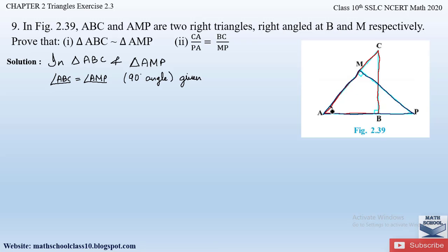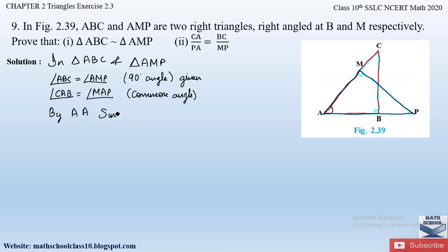Angle ABC = angle AMP = 90 degrees, that is given. Also, angle A is common between the two triangles ABC and AMP. So we write angle CAB = angle MAP — that is the common angle. We now have two angles equal in the two triangles, so by angle-angle similarity criteria, triangle ABC is similar to triangle AMP.